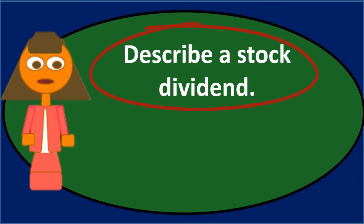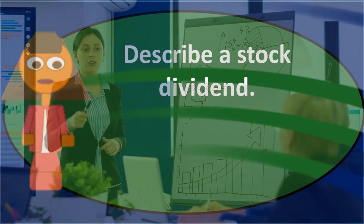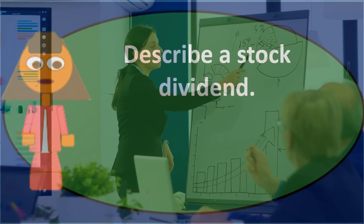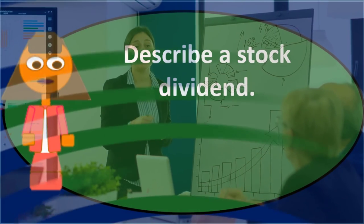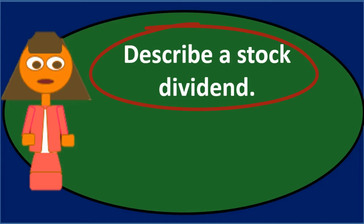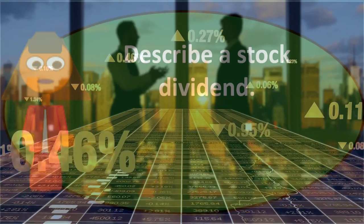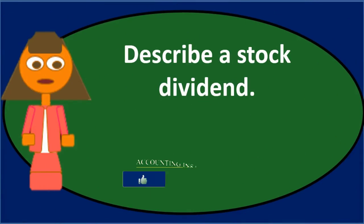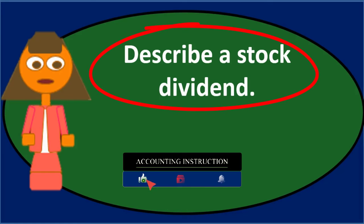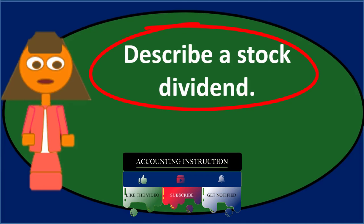Why would a company issue a stock dividend? It could provide confidence and value for the stock, serving valuation purposes on the stock exchange. It can also reduce the market price per share, because issuing more shares means more shares are outstanding. If there were 100 shares before and a stock dividend is issued, there are now more shares, so the market price per share should decrease.